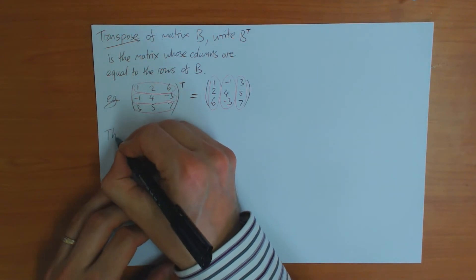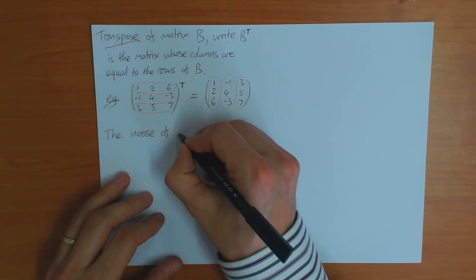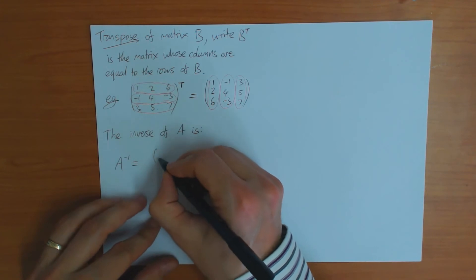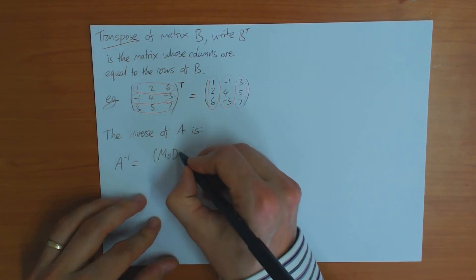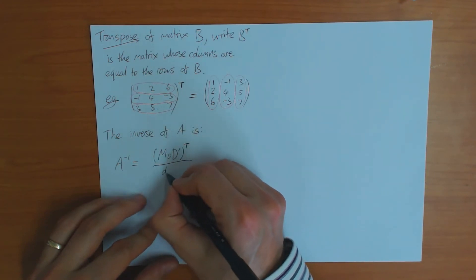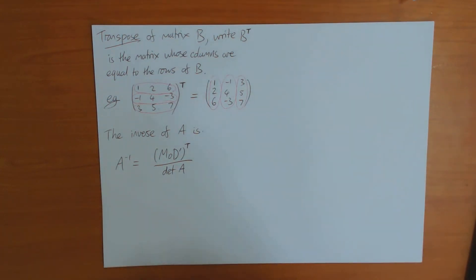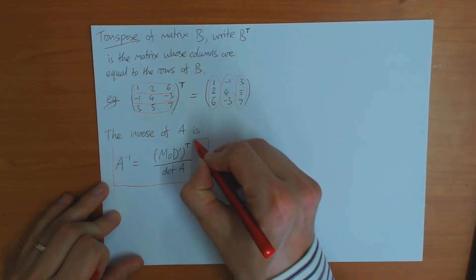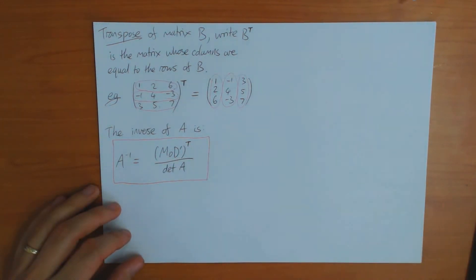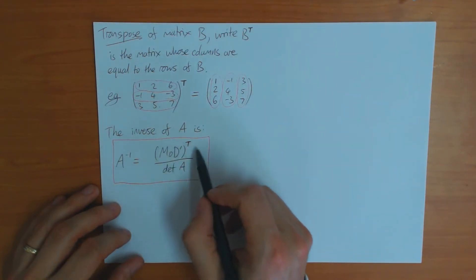With that definition, the formula for the inverse is: A⁻¹ equals the transpose of the matrix of determinants multiplied by the chessboard, divided by the determinant of A. That is the general formula for the inverse of a matrix.